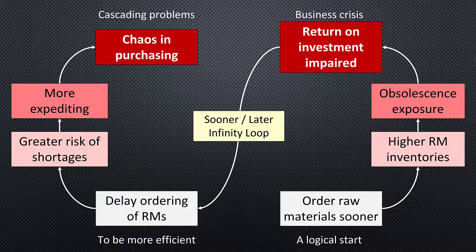If a person doesn't have any time, they can't get things there on time. If a person doesn't have any time, there's too much expediting to do. Everything falls apart at this point. So we go back to ordering raw materials sooner — it's a nasty infinity loop.